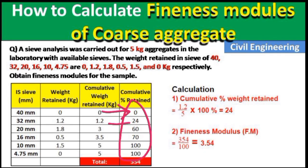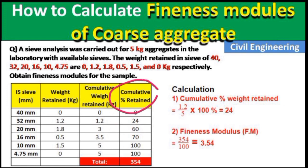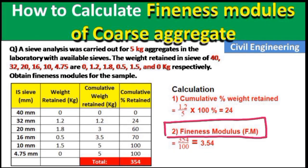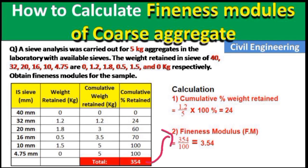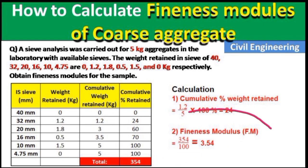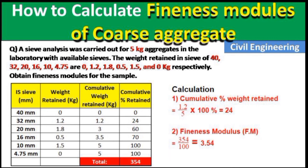After calculating all values, the total cumulative percentage retained sums to 354. Therefore, fineness modulus = 354 ÷ 100 = 3.54. This is the fineness modulus of the aggregate. In this way we can calculate the fineness modulus of coarse aggregate. Please like this video and subscribe to the channel for new updates about civil engineering. Thank you.